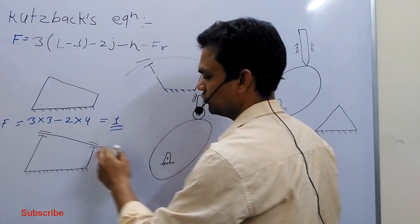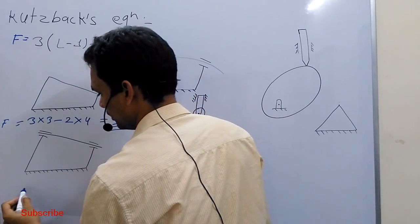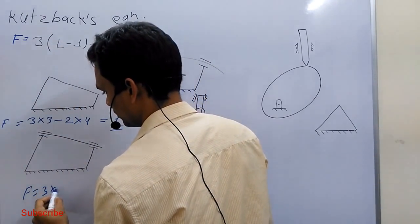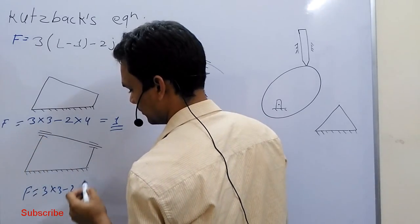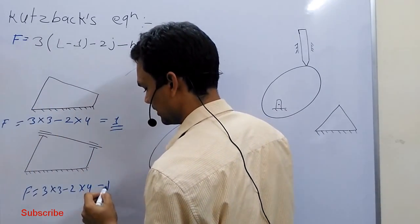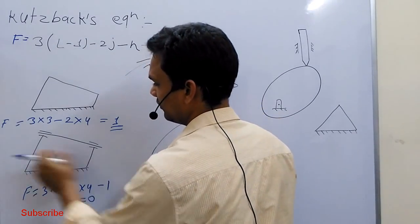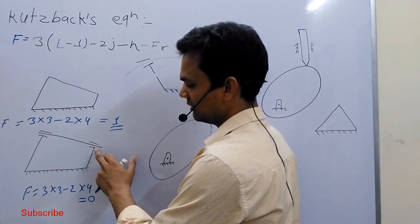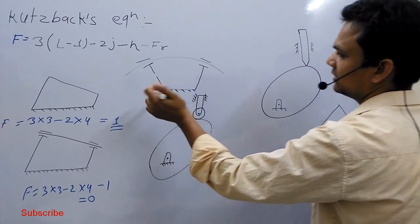So if I put in these values, you can see: three times (four minus one) into three, minus two, number of joints one, two, three, four, and no higher pair. So I minus one — it is equal to zero. Now if I move this link, I am not sure that this link also moves. So the degree of freedom of this system is zero.